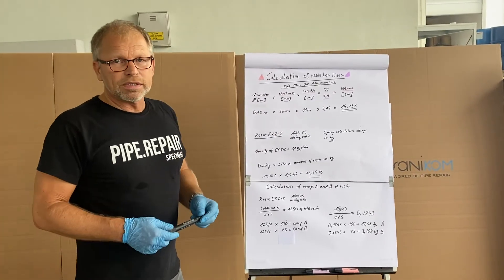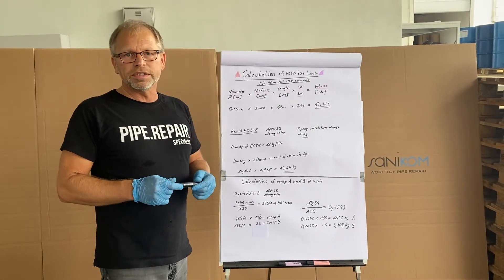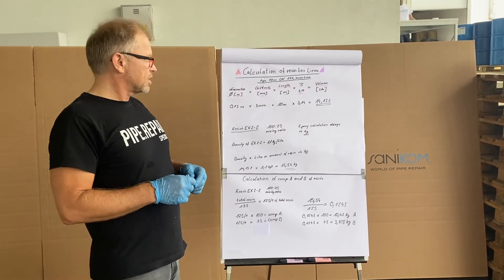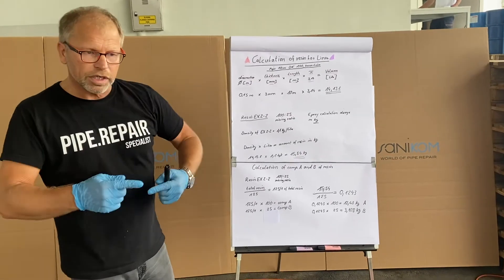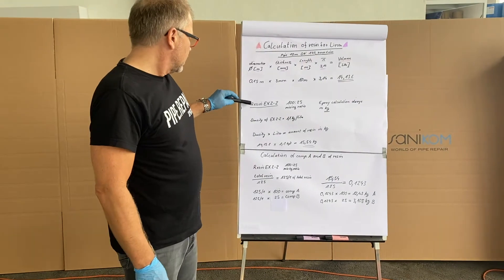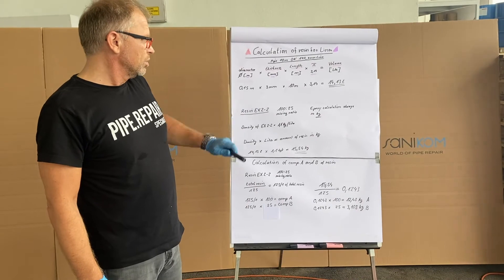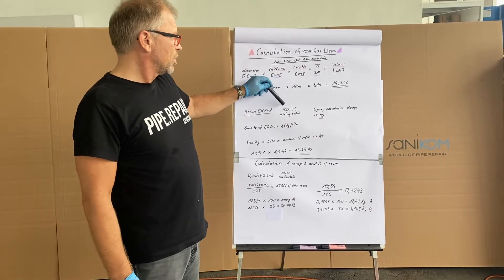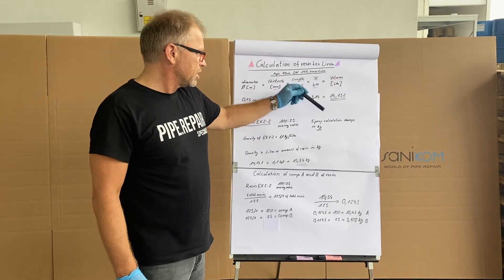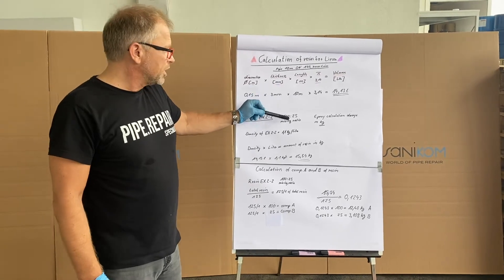But epoxy resins will never be measured in liters. We are always calculating in kilogram, and that's the reason why we have to convert it into kilograms. We use for example the resin EX22 — here is the mixing ratio: 100 to 25. Epoxy calculation always in kilograms. The density of the EX22 is 1.1 kilogram per liter.